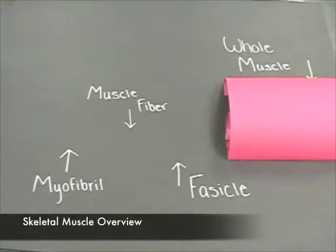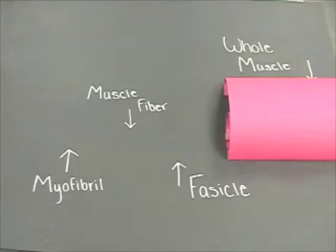This is a simplified overview of the structure of skeletal muscle. Here we see the whole muscle, which would be covered by a layer of connective tissue called epimysium.